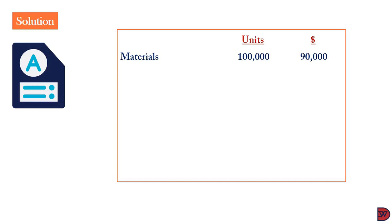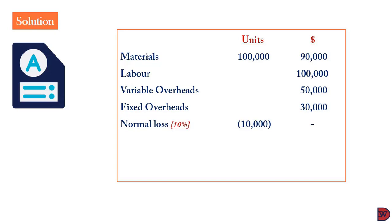Materials: 100,000 units at $90,000. Labor was $100,000. Variable overheads was $50,000. Fixed overheads was $30,000. We are using absorption type costing. When the costing demands marginal, you omit the fixed overheads. The normal loss is 10%, so the 100,000 less 10,000 gives 90,000.